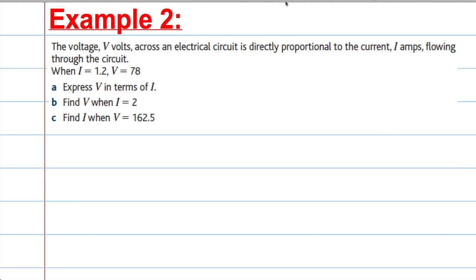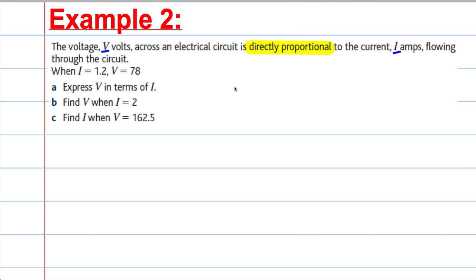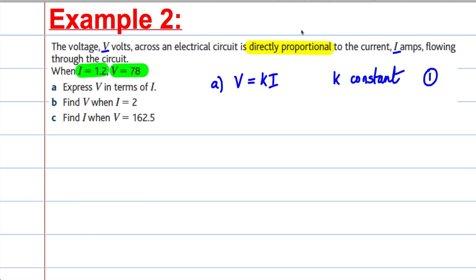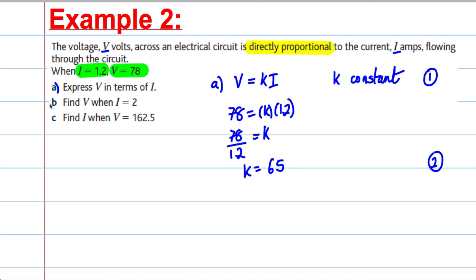Example two. The voltage V volts across an electrical circuit is directly proportional to the current I flowing through the circuit. So V is directly proportional to I, and therefore V is equal to K multiplied by I, for K a constant — that's one mark. We're told when I is 1.2, V is 78. Substituting in: 78 equals K multiplied by 1.2, so K is 78 divided by 1.2, which equals 65. We get our second mark for finding K, and rewriting gives V equals 65I for our third mark. A question like that is always three marks.